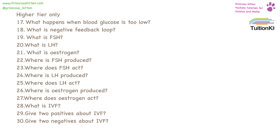This rest of it is for the high tier only. When blood glucose is too low, the liver converts its stores of glycogen into glucose. A negative feedback loop is when the reaction causes a decrease in the reaction.